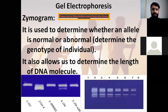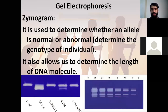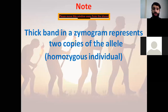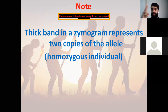Gel electrophoresis: a zymogram is used to determine whether an allele is normal or abnormal, and it's used to determine the genotype of the individual. It also allows us to determine the length of the DNA molecule in the lab. Note that a thick band in the zymogram represents two copies of this allele, meaning that this individual is homozygous.